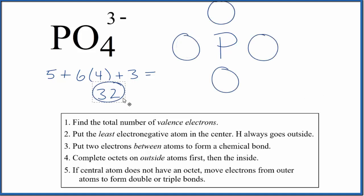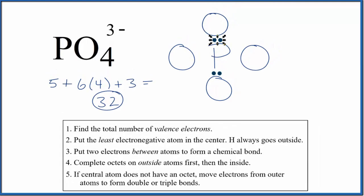So we have 32 total valence electrons. We're going to start by putting electrons between the phosphorus and the oxygen atoms, and that'll give us the chemical bond.